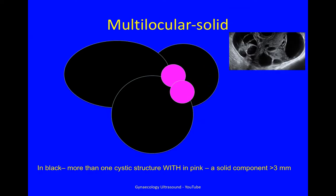This mass is multilocular solid. There's more than one cystic structure, and there is solid material.